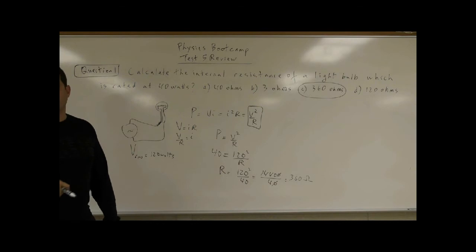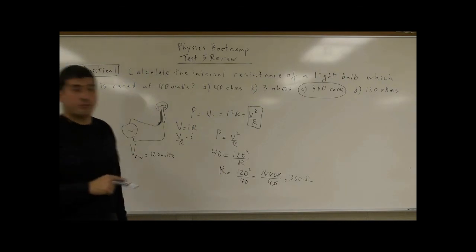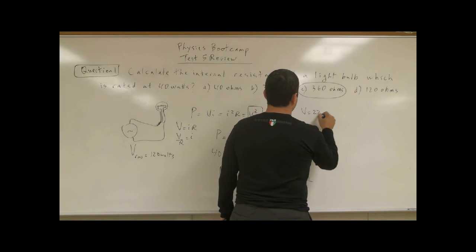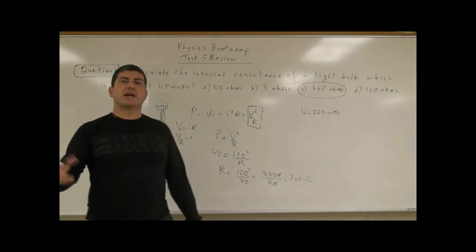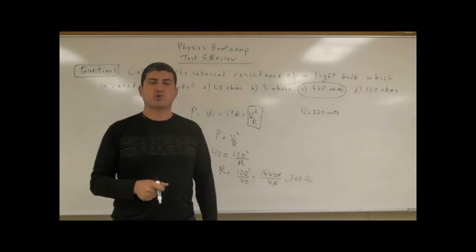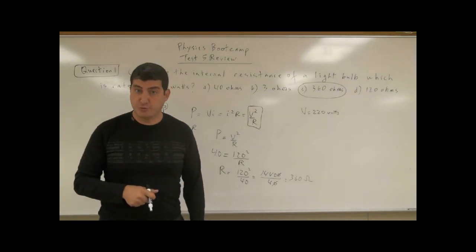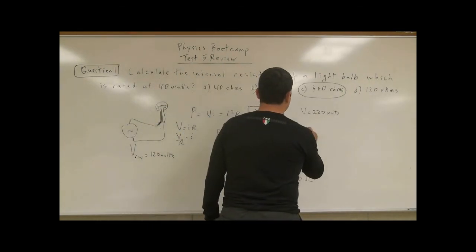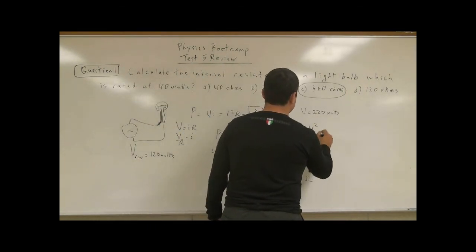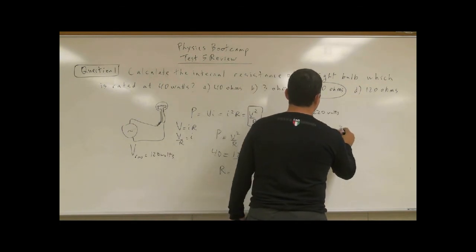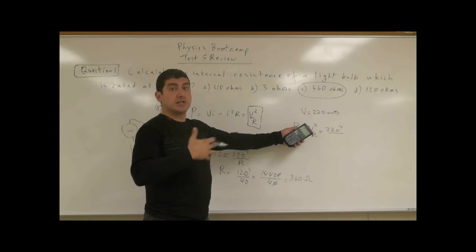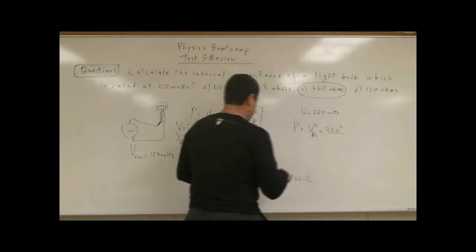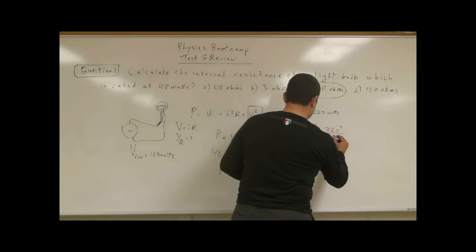Now, if you took that to Europe or somewhere else, and let's say the voltage there was 220 volts, and you connected that light bulb to that voltage source, what would be its power output? Power output equals V² over R. So then you have 220 squared. Now the voltage is going to be higher, it should light up more,